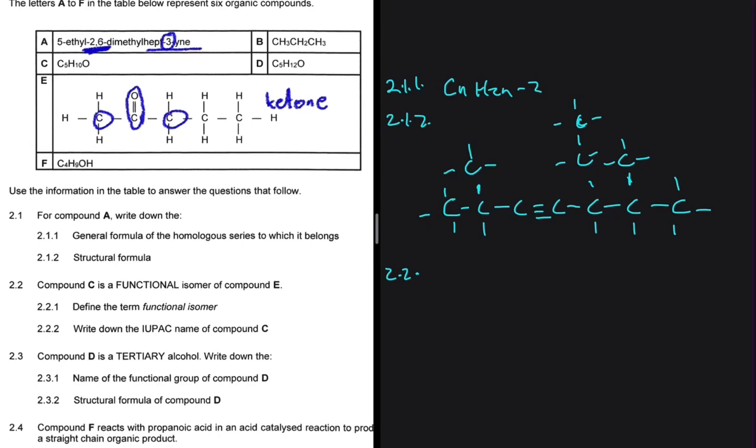And then 2.2.1 is saying, let's define the term functional isomer. Organic compounds that have the same molecular formula, but different functional groups. Just like ketone and aldehyde.